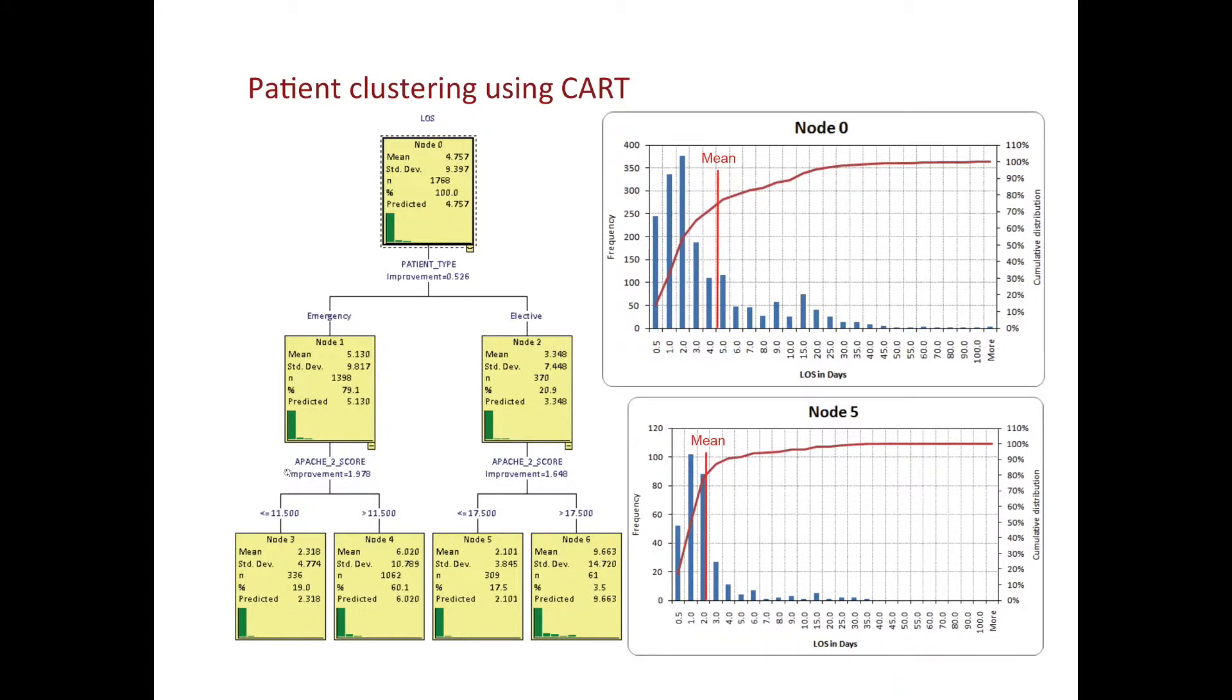This time, it selected APACHE score, which actually is a measure of severity of the patient. So for example, we have found a node here, node 5, which only has an average length of stay, on average, around 2 days and 309 patients. And that has a very different distribution, much shorter than node 0 overall.